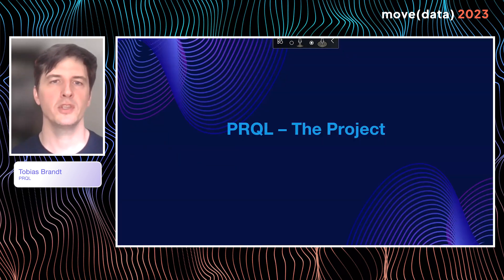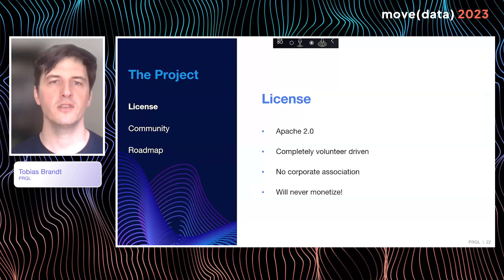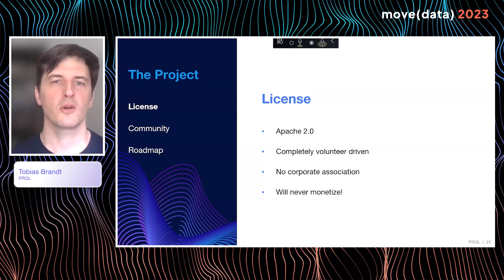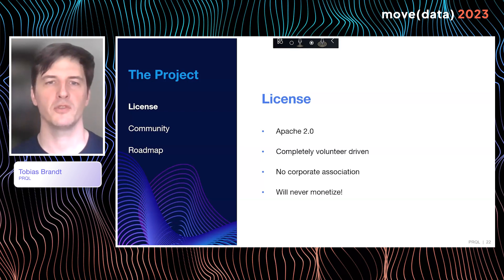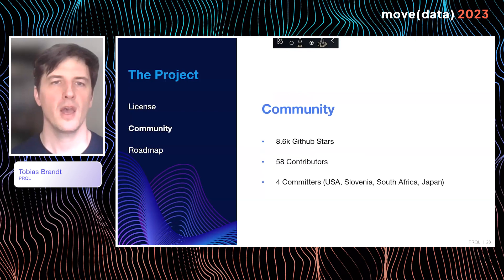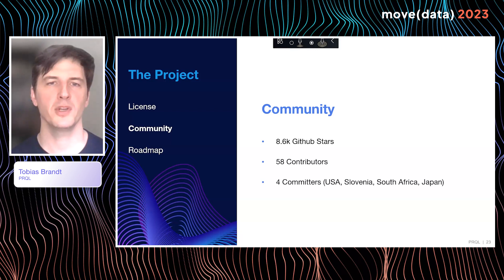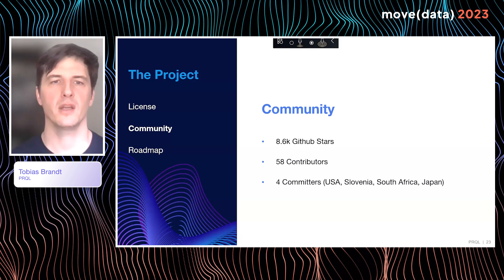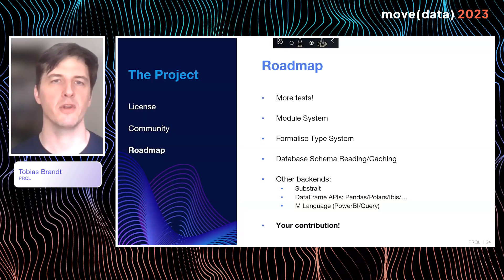Let me tell you a little bit about the project. It's Apache 2 licensed, so you can use PRQL wherever you want — in hobby work or at work commercially. It's completely volunteer-driven; we have no corporate association and we will never monetize, and we want to demonstrate that to the community. Our community has over 8,600 GitHub stars to date, 58 contributors who've had PRs merged into the codebase, and four main committers from all over the globe — a really diverse team driving the language development forward.